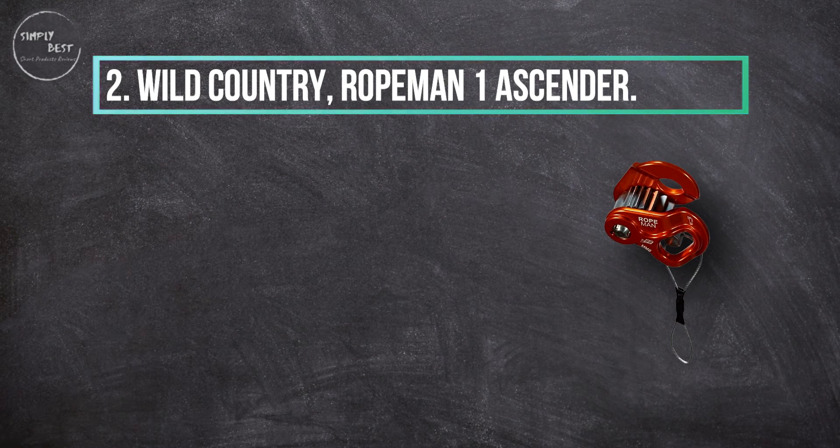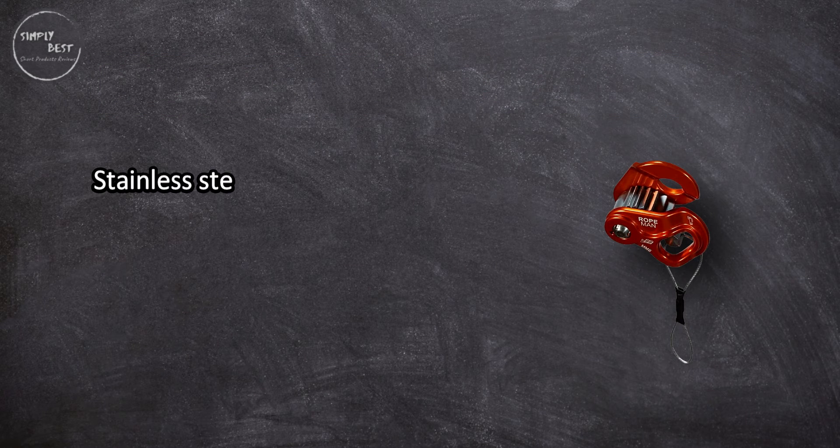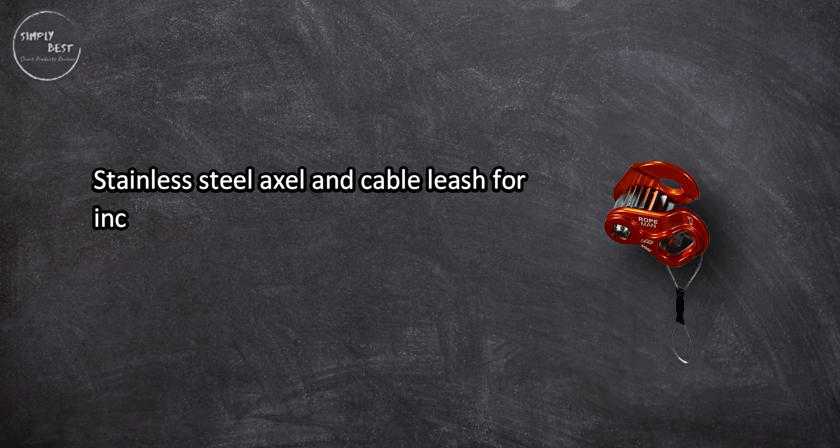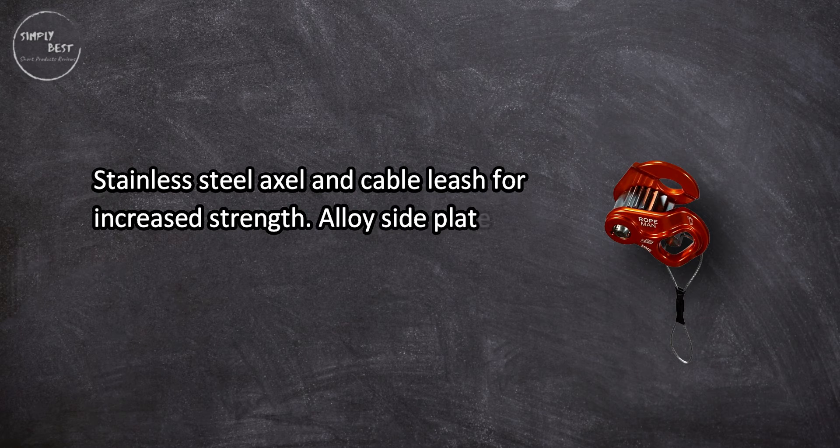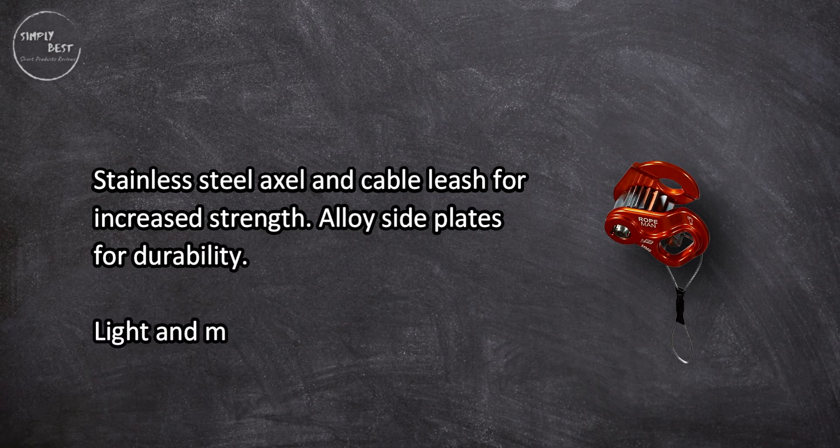At number two, Wild Country Ropeman One Ascender. Stainless steel axle and cable leash for increased strength, alloy side plates for durability, light and multifunctional.